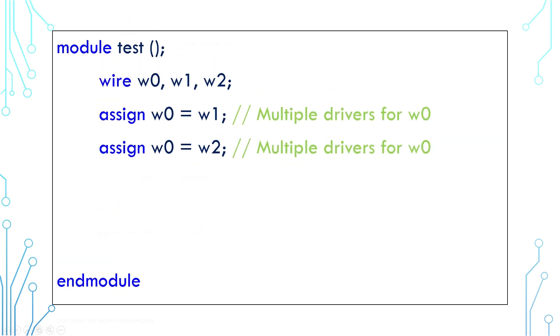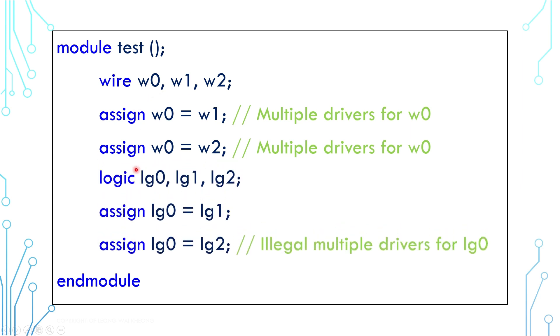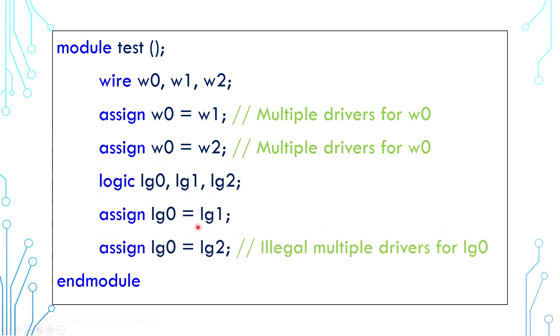Wire can be connected to multiple drivers. As an analogy, imagine a laptop having a USB mouse and a mouse pad. You can control the cursor using either of them, but if you use both of them at the same time, the cursor behavior is unknown. This is the concept of multiple drivers in hardware and this is the case where logic cannot support. You can use logic with continuous assignment, but you cannot drive a logic signal with multiple drivers. Only wire can do that.